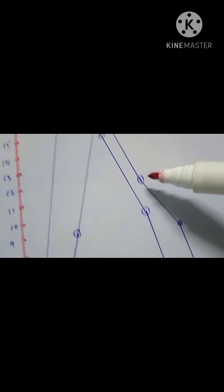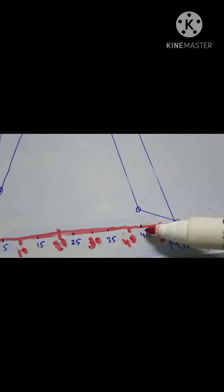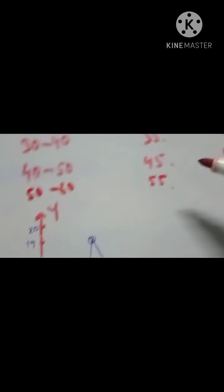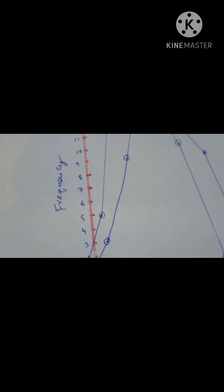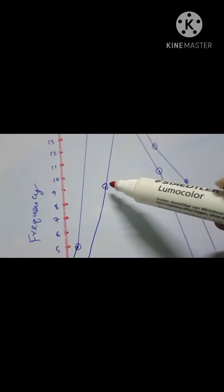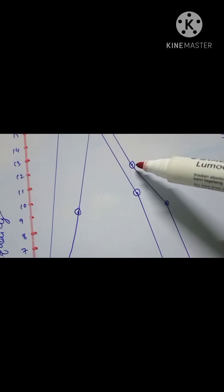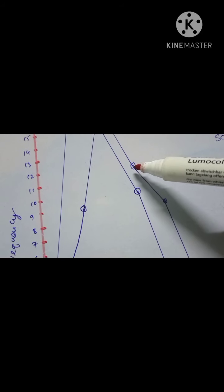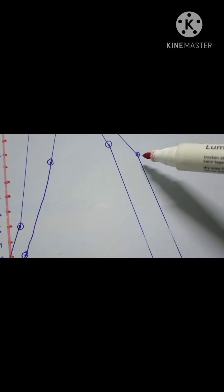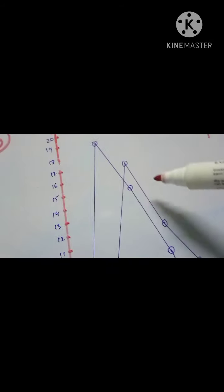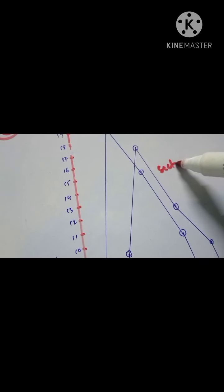For mid value 45 the frequency is 9, and for mid value 55 the frequency is 0. Now we join the points: from 0 to 3, then 3 to 9, then 9 to 17, then 17 to 12, then 12 to 9, and then 9 to 0. This completes the frequency polygon for Section A.